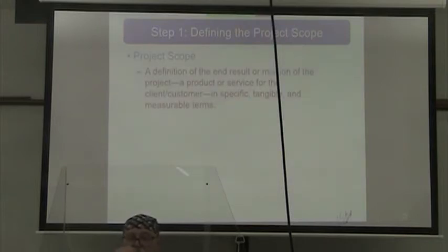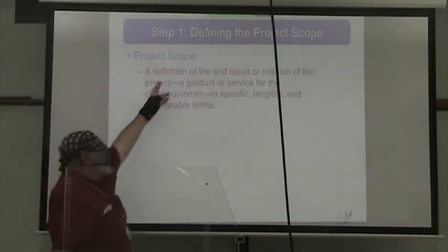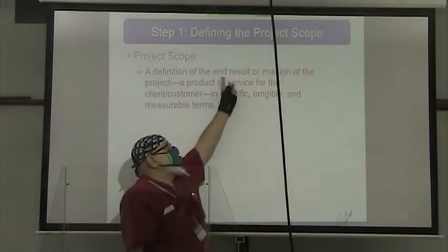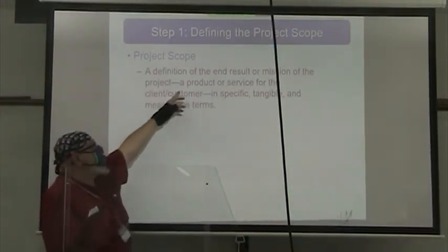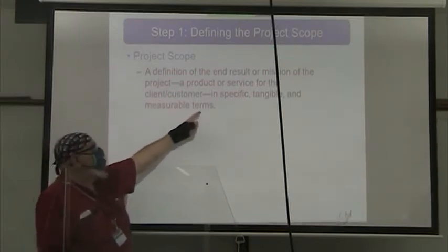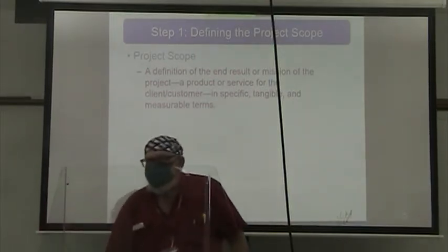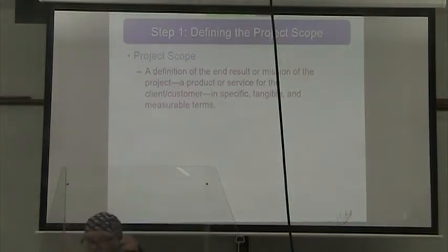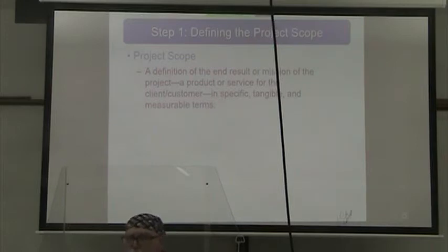When we talk about defining the project, we talk about our project scope — a definition of what is the end result or mission of our project. Is it a product or service for the client or customer? We have to describe that in specific, tangible, and measurable terms. Our project scope can never just say 'we want to make things better.' That's a noble aspiration, but how do we want to make them better?